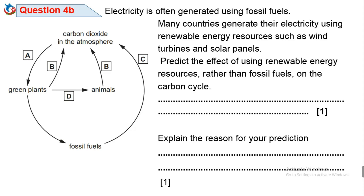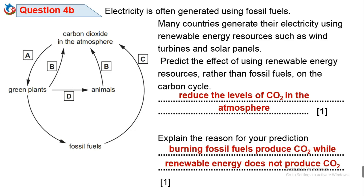The use of fossil fuels contributes more carbon dioxide to the atmosphere, which contributes to the destruction of the ozone layer. Using renewable energy resources rather than fossil fuels will reduce levels of carbon dioxide in the atmosphere. The reason is that burning fossil fuels produces carbon dioxide, while renewable energy does not produce carbon dioxide.